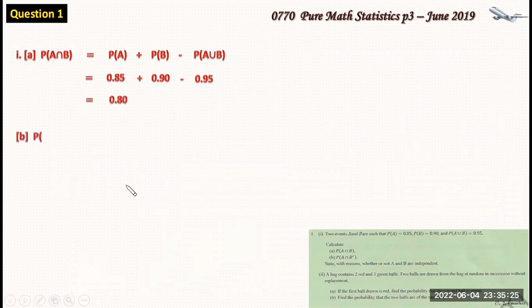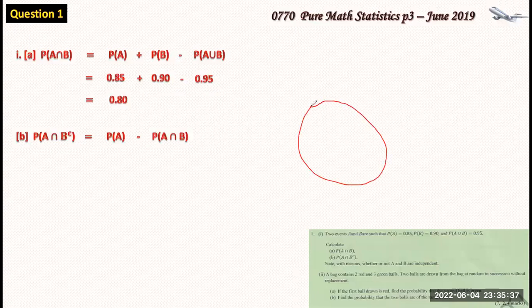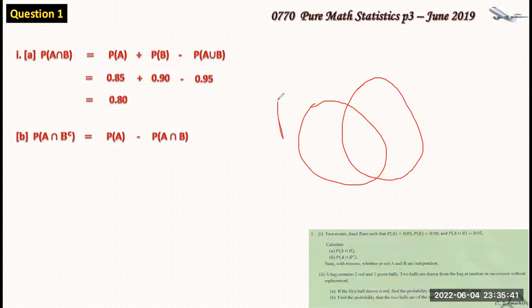Now for the probability of A intersection B complement. This probability of A intersection B complement is the same as the probability of A minus the probability of A intersection B. And I can indicate this here.